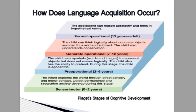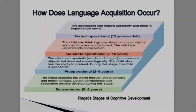Each stage is marked by shifts in how they process three things: thought, judgment, and knowledge. As you can see, it goes all the way from sensory motor, pre-operational, concrete operational, all the way to formal operational at the age of 12 years or older.